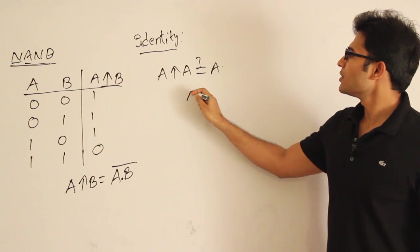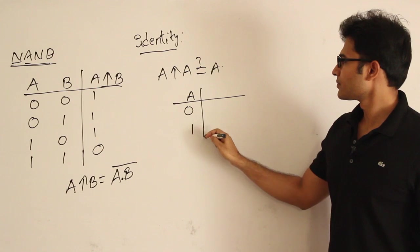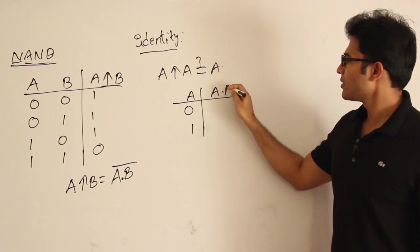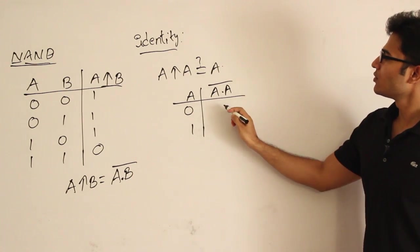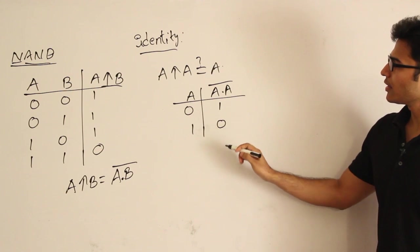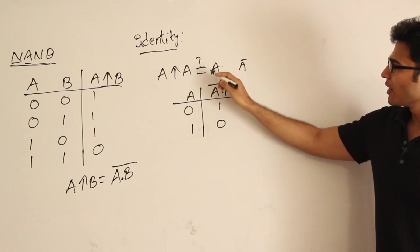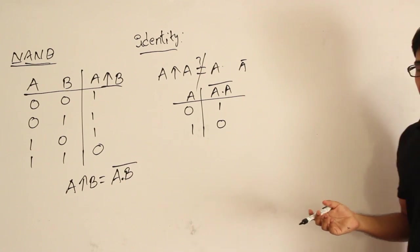If I construct the table, A is the input: 0 and 1. Now let us see A NAND A, which means AND with A and then negate it. If I do this here I get 1, if I do this here I get 0. So actually what I am getting is A complement, not A. Therefore it is not equivalent. It doesn't follow identity.